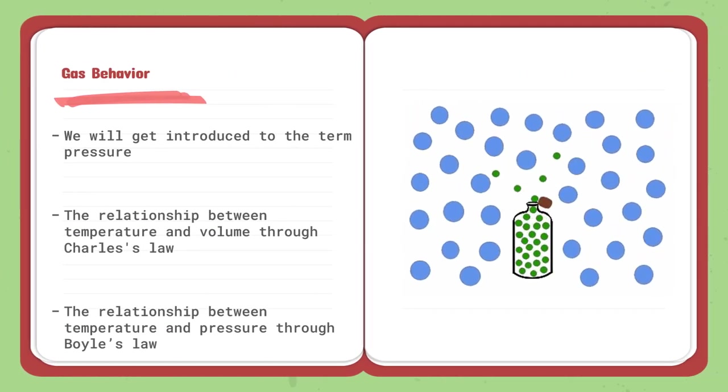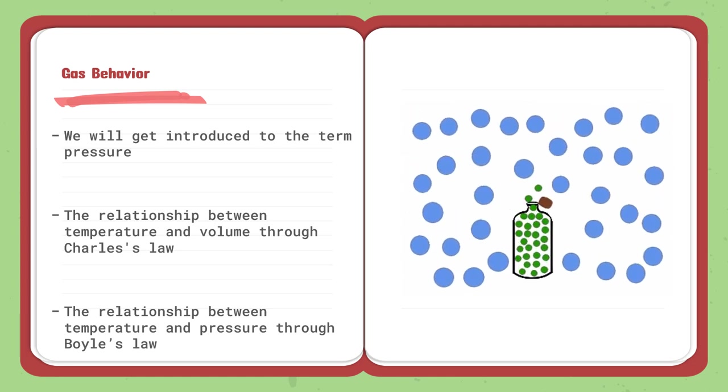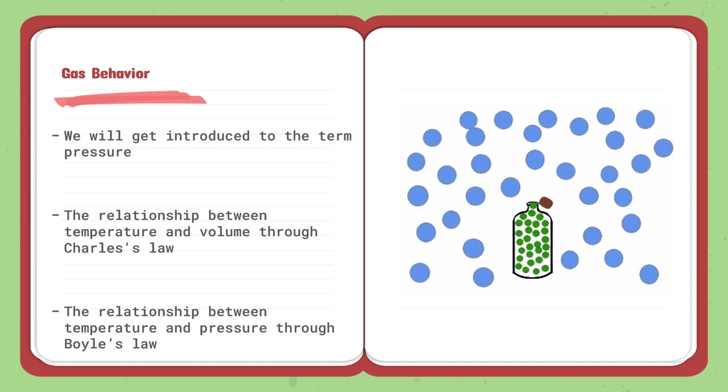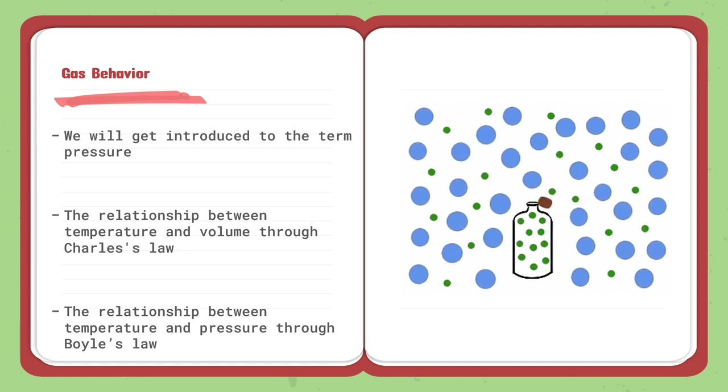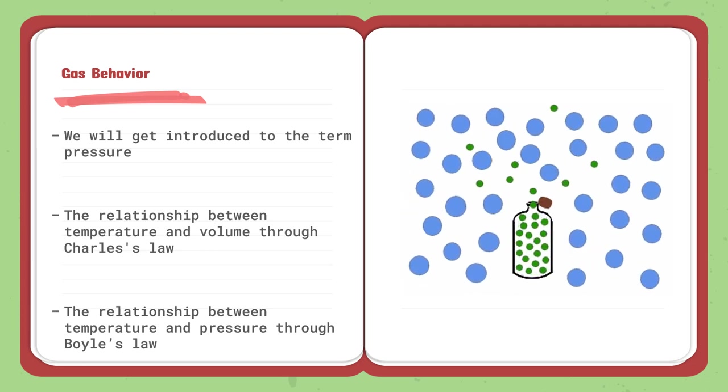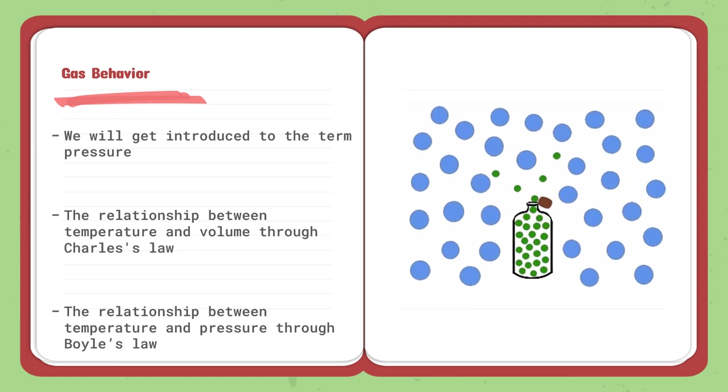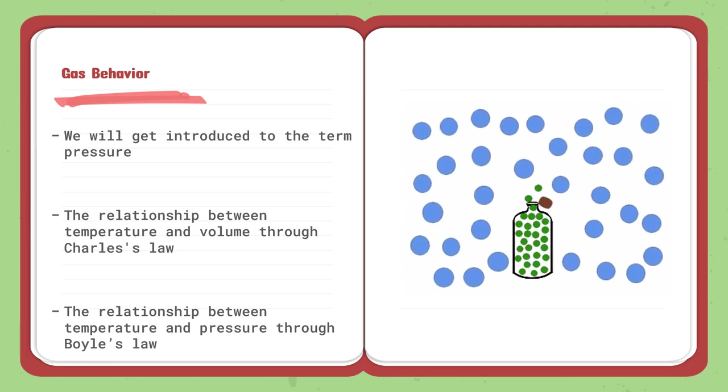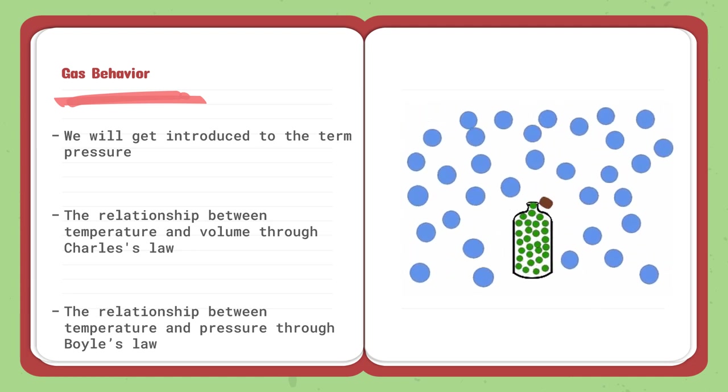On to the last lesson in topic two, which is gas behavior. We will be introduced to the term pressure. We will be focusing on how gas behaves and how it changes and what relationship it has between temperature and volume through Charles law, and then the relationship between temperature and pressure through Boyle's law.